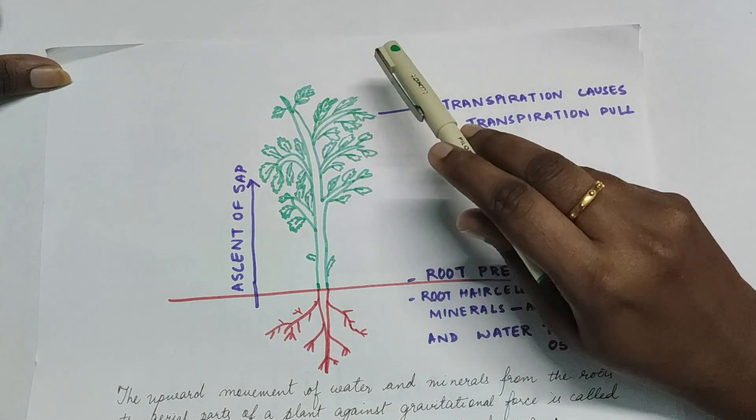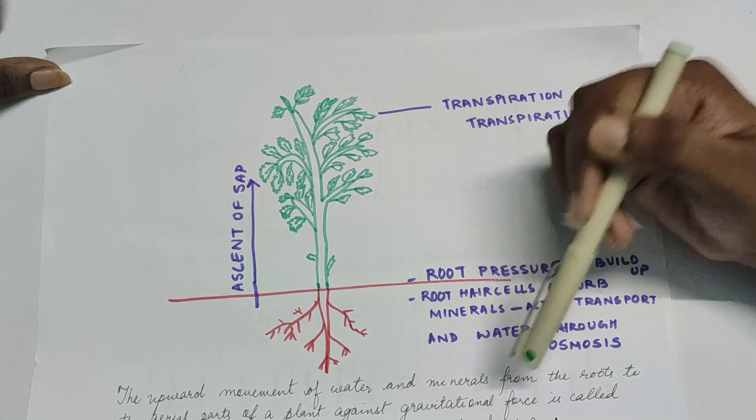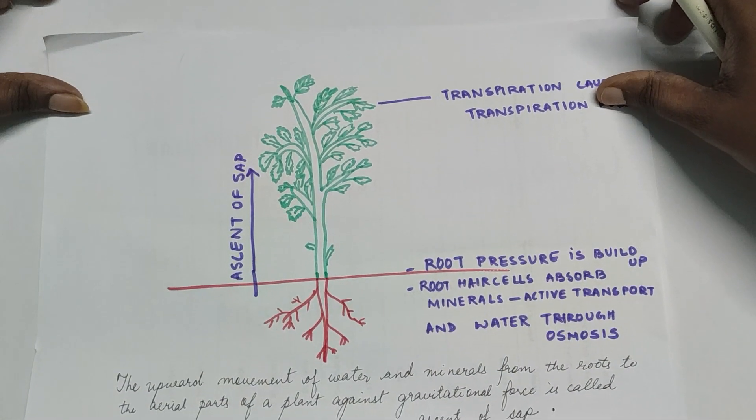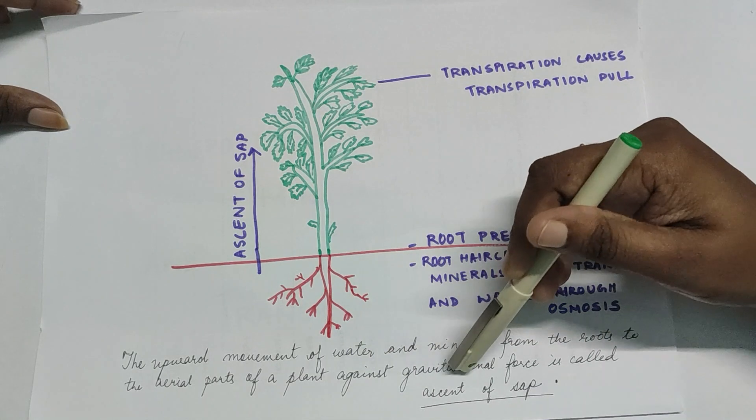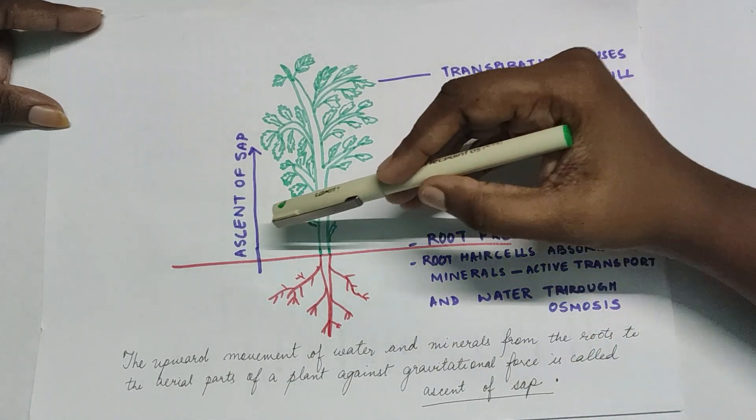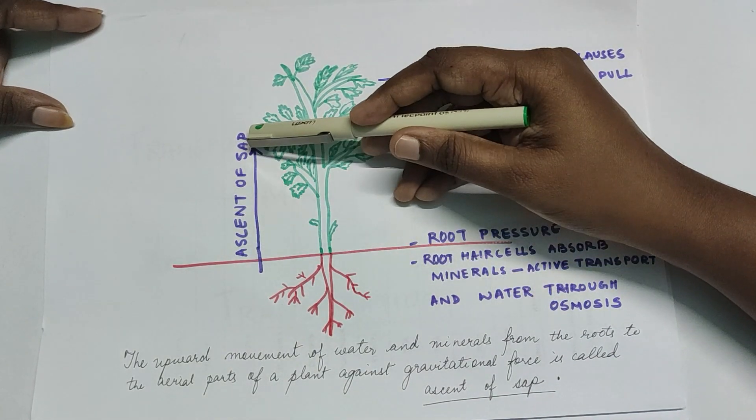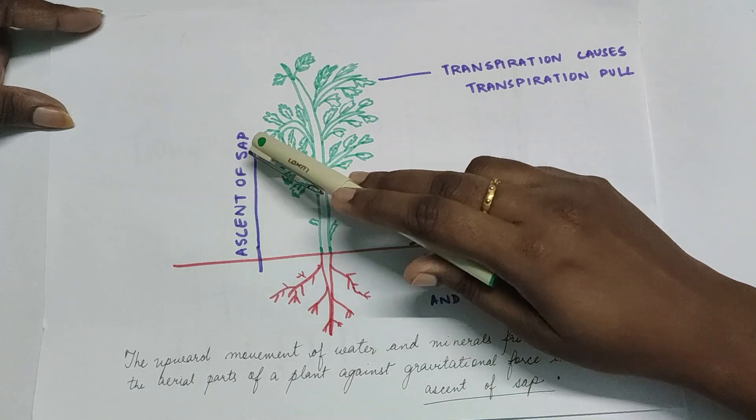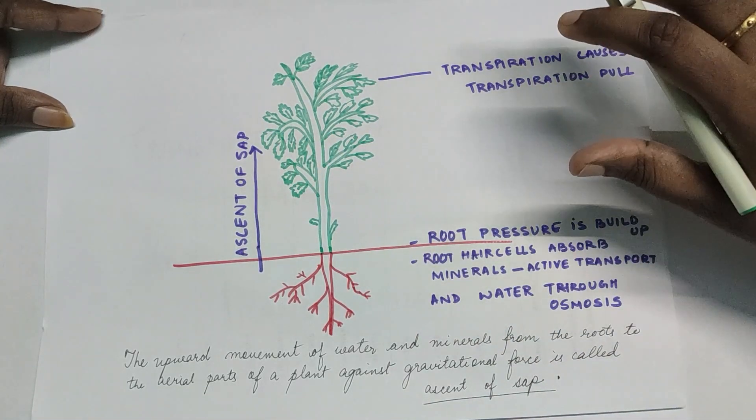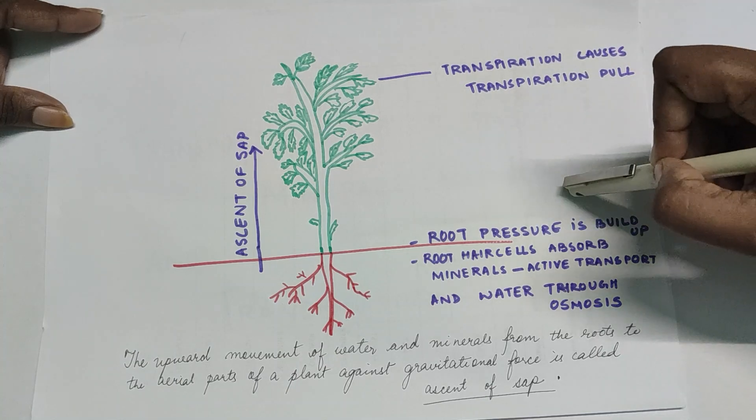The stems, leaves, flowers, and this upward movement of water and minerals from the roots to the aerial parts of the plant against the gravitational force is called ascent of sap. Now what is cell sap? It is nothing but a fluid containing the mineral salts and water, generally found in the vacuole of a cell.